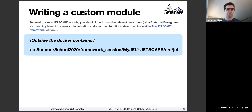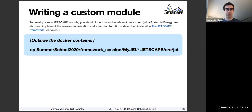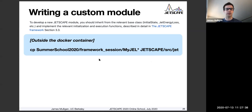This custom module is sitting inside the summer school 2020 directory. If you run this copy command — summer school 2020 slash framework session slash my jet energy loss star — there are two files that should copy: a header and a .cc file. Copy those into your Jetscape directory, Jetscape slash source slash jet. One point I overlooked: these files were actually added quite recently to the repository, so I forgot a step.